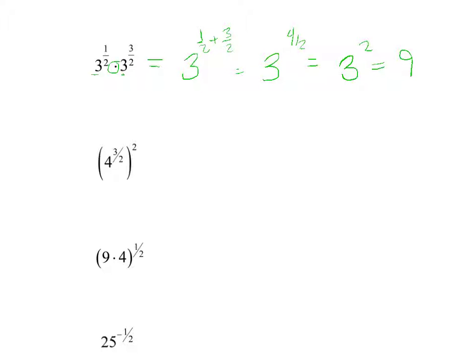On the next one, remember, when you have an exponent raised to another exponent, you multiply the exponents, and this is 2 over 1. So really we're going to have 4 to the, well the 2's are going to cancel, so you have a 2 on top and a 2 on bottom, so really it's just 4 to the 3rd, which is 64.